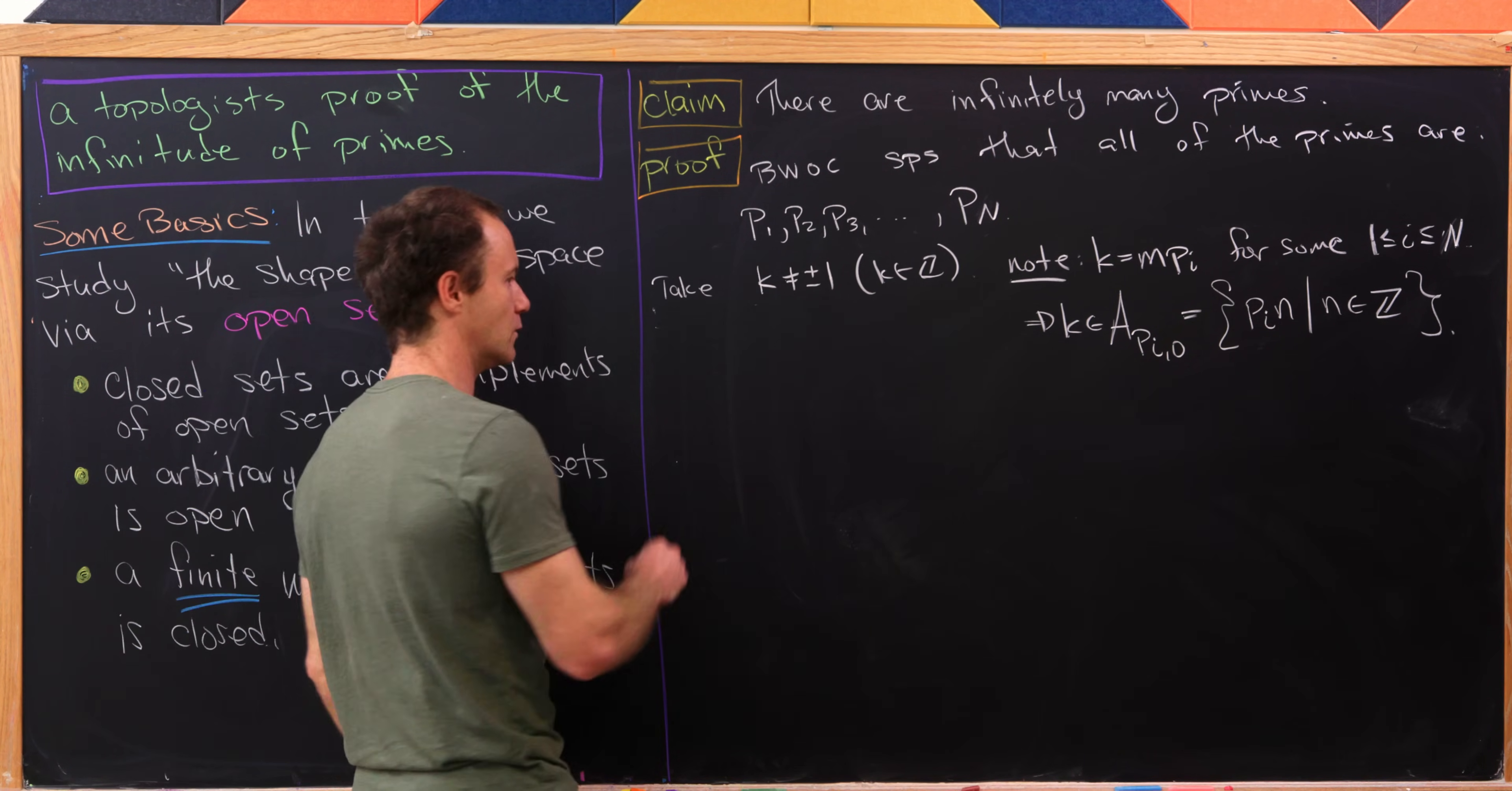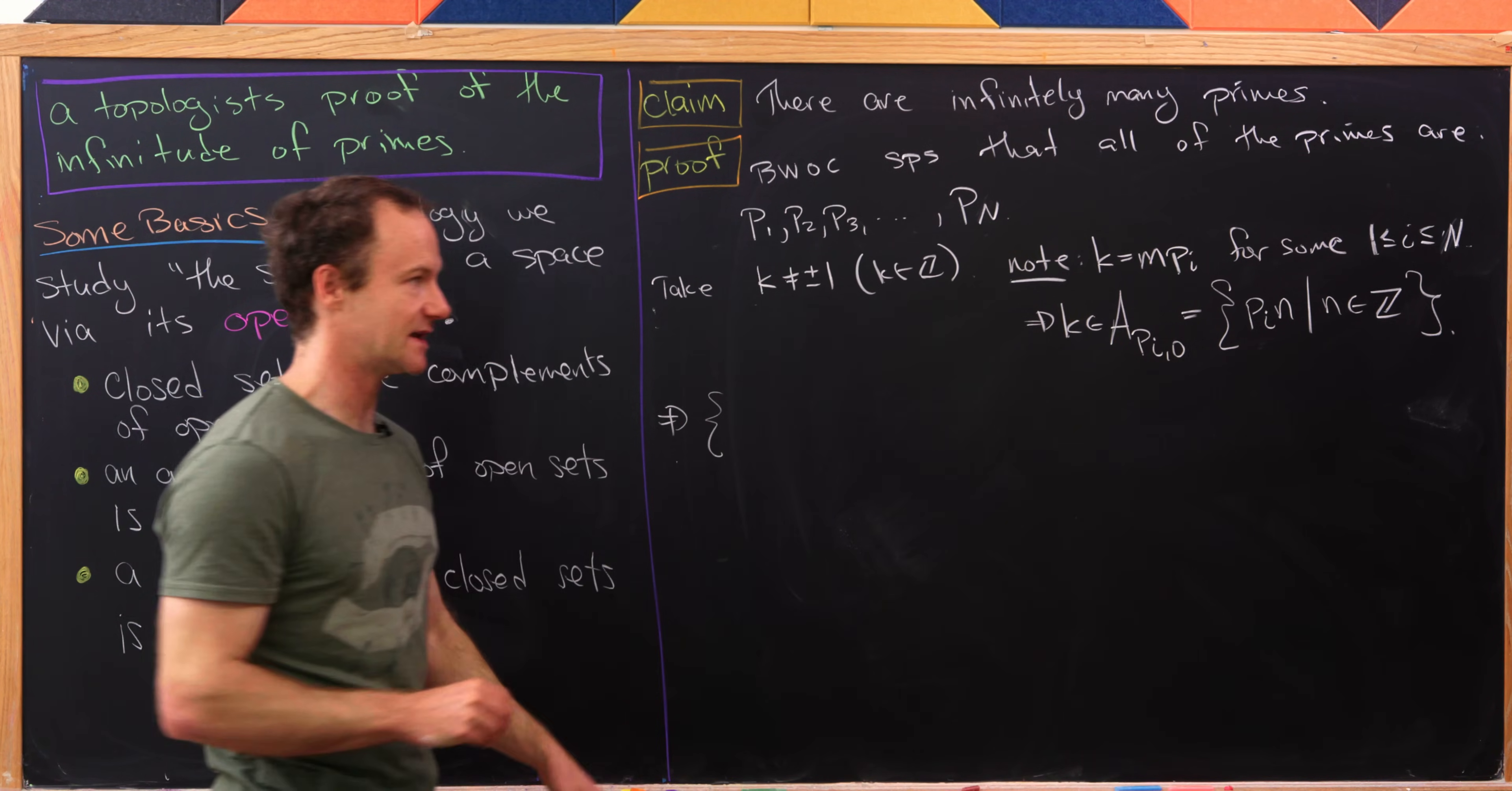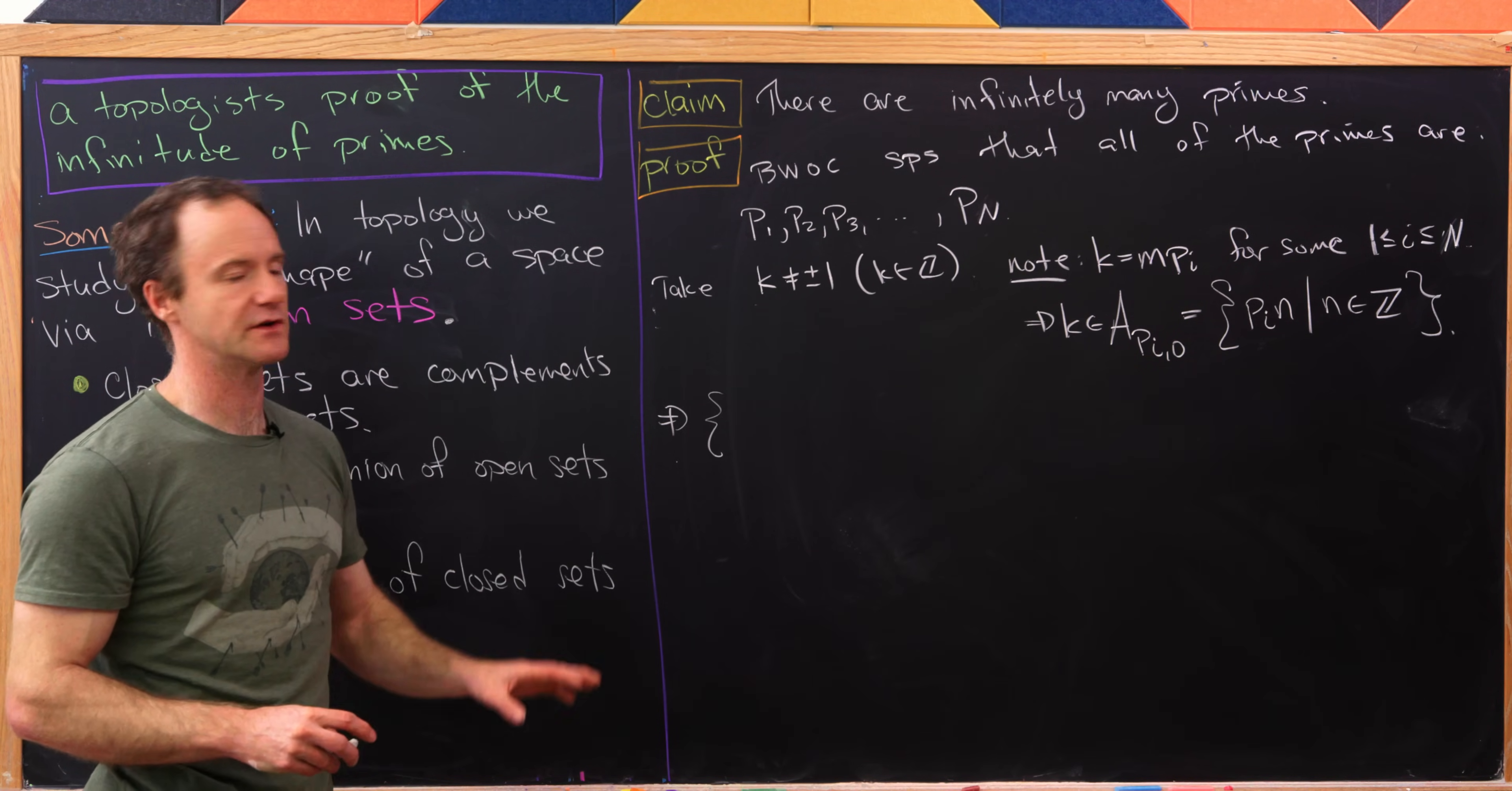We've shown that every integer that is not plus or minus one is in one of those sets. Okay, but what does that mean? Well, that means that the following set is equal to the union of all of those sets.